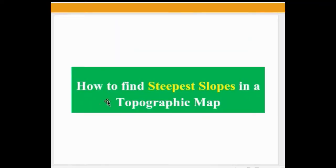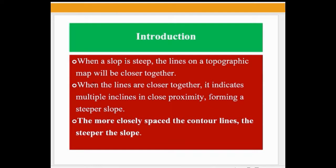In this video we talk about how to find the steepest slope in a topographic map. When a slope is steep, the contour lines on a topographic map will be close together. When the lines are closer together, it indicates multiple inclines in close proximity, forming a steeper slope. The more closely spaced the contour lines, the steeper the slope — this is the thumb rule.